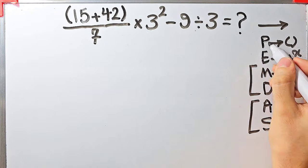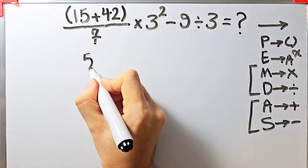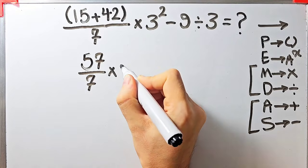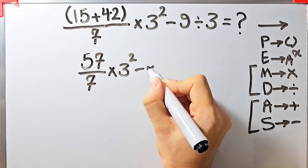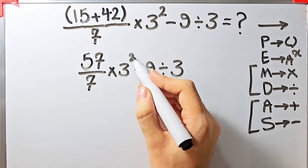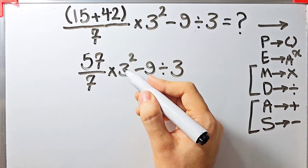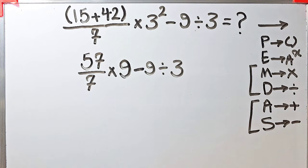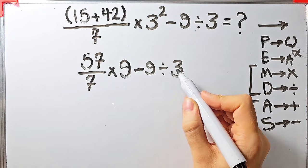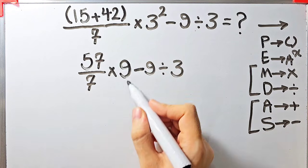According to the PEMDAS rule, first we simplify the parentheses: inside the parentheses we have 15 plus 42, which equals 57. Now we have 57 over 7, times 3 to the power of 2, minus 9 divided by 3. Now we have multiplication, exponent, subtraction, and division. In this step we simplify the exponent: 3 to the power of 2 equals 9.